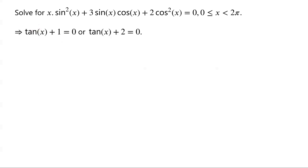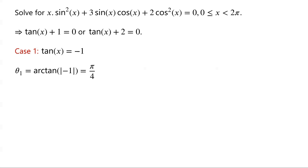The problem is divided into two cases. Case 1: tan of x equals negative 1. We know that tangent is negative in quadrant 2 and in quadrant 4. Let theta 1 equal arctan of the modulus of negative 1. Theta 1 is the reference angle — the acute angle whose tangent is 1 — which is equal to pi over 4. The solution in quadrant 2 is pi minus theta 1, which equals pi minus pi over 4, which is 3 pi over 4.